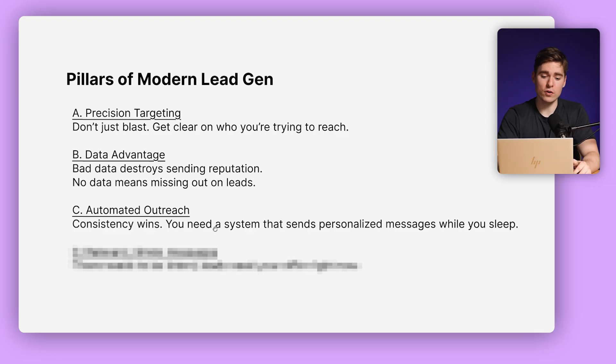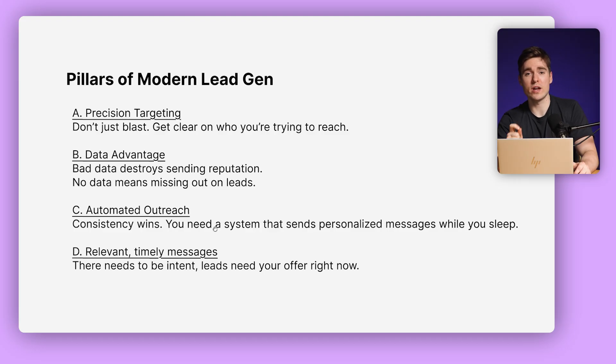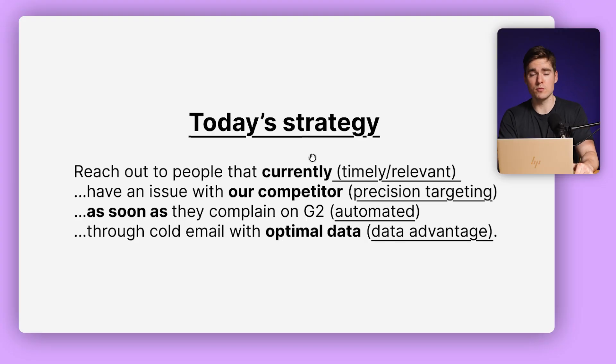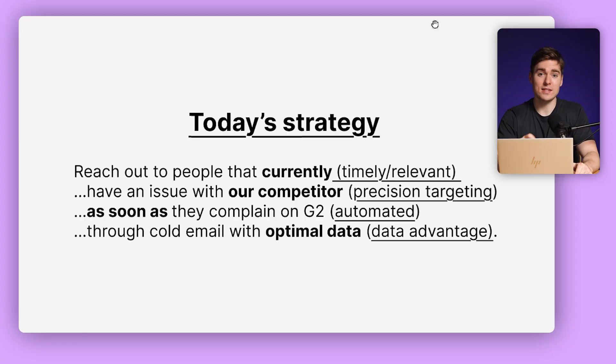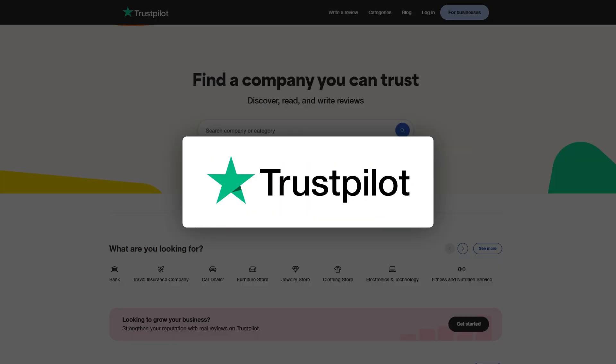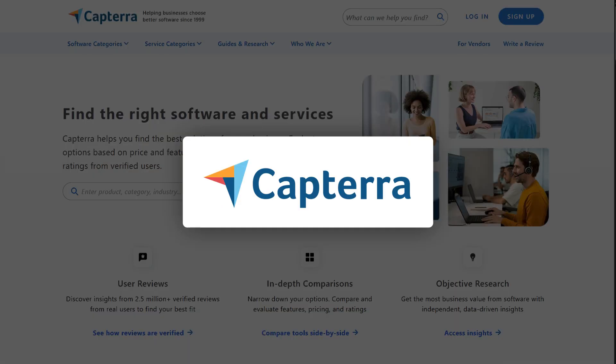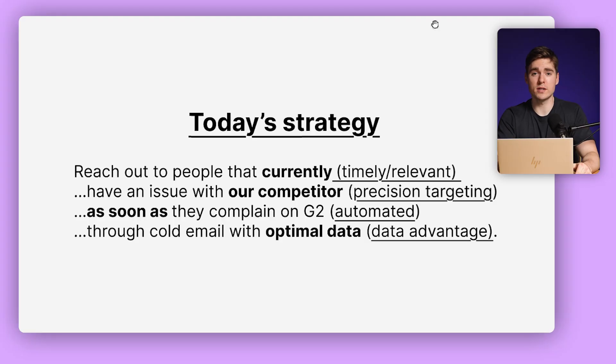Another very important pillar, often overlooked, is relevant and timely messaging. There needs to be intent — the leads should need your offer right now. Today's strategy is about reaching out to people that currently have an issue with our competitors. It's precision targeting — not targeting everyone, but targeting people that are already using a solution similar to ours. You're reaching out to them as soon as they complain on a platform called G2, especially in the software industry, which is for reviews. But you can also use Google Reviews, Trustpilot, or Capterra. This means it's automated because as soon as something appears, we're going to reach out to them — through cold emailing.